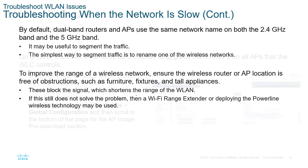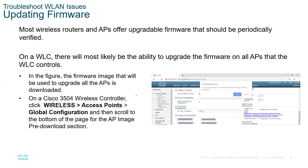Updating firmware: most routers offer upgradable firmware. On a controller there will most likely be the ability to upgrade the firmware on all access points — you can push updates to all access points centrally. The reason to push updates is to get better performance and better security, therefore improving the overall performance of your network.